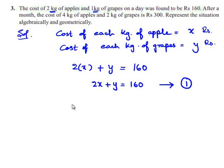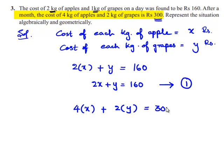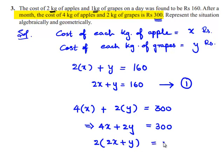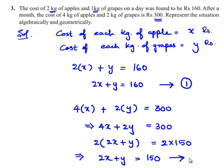Using the second condition, the cost of 4 kg of apples is 4x and the cost of 2 kg of grapes is 2y. So the total cost is equal to 300 rupees. We can write this as 4x + 2y = 300. Now, we can take 2 as common, which gives us 2x + y = 150. This is equation number 2.